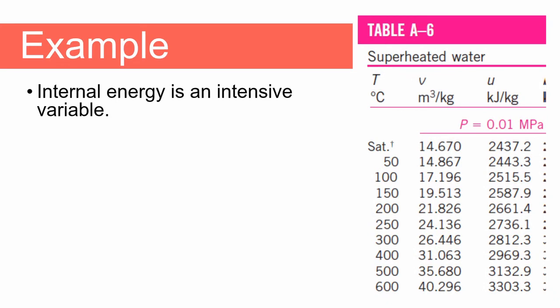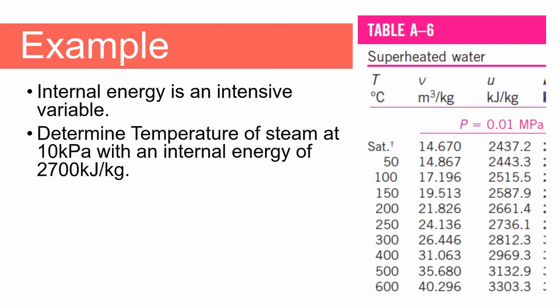It can be shown that internal energy is an intensive variable. For a single-phase substance, if we specify the values of two intensive variables, such as pressure and temperature, we can determine the values of the others. Let's look at another example showing this. The question asks: determine the temperature of steam at 10 kilopascal with an internal energy of 2700 kilojoules per kilogram.